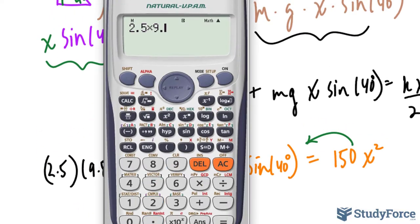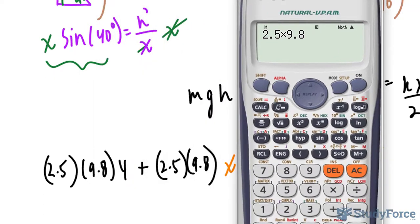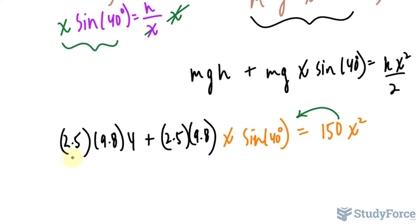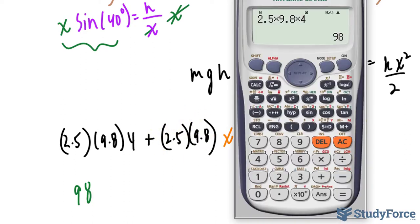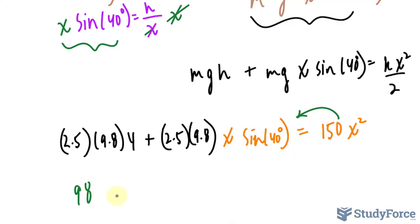So I have 2.5 times 9.8 times 4. All of this is 98. I can find out what that is. 2.5 times 9.8 times sine 40. Make sure your calculator is in degrees. And that's roughly 15.748x minus 150x squared.